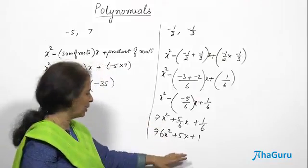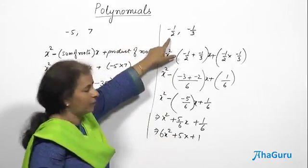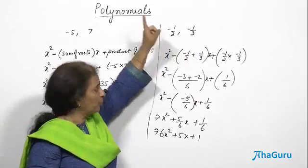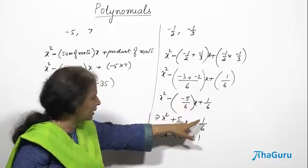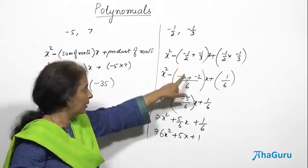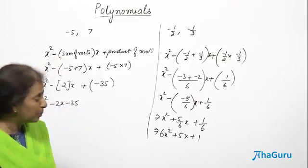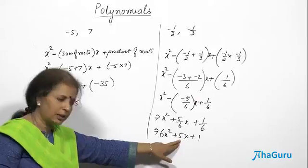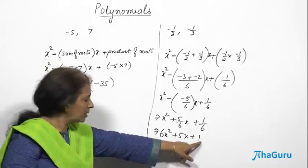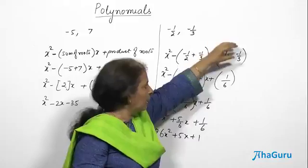So these two polynomials are actually the same thing. From the roots we got the polynomial. Now from the polynomial 6x squared plus 5x plus 1, the sum of roots is minus B by A, which is minus 5 by 6 — matching what we took. The product of roots is C by A, which is 1 by 6 — also matching. So our final polynomial is verified as correct.